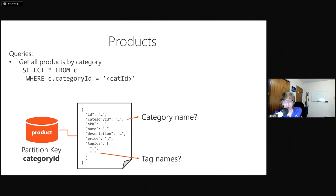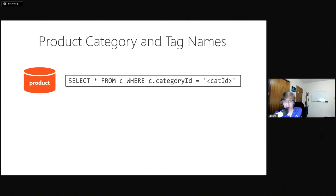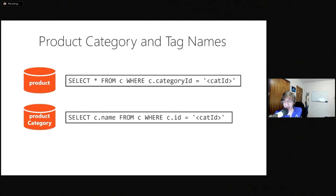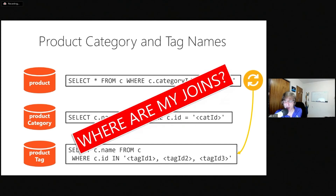Partitioning on category ID satisfies the most common query and scales nicely as categories and products are added. But when I get those product documents back, I can't yet display the webpage — I only have IDs for the category name and tag names, not the actual strings. That means I need to run this query to get all products in a category, then a second query to get the category name, and then — for each result from the first query — a third query with an IN clause to get the names of the tags. At this point, if this weren't virtual, I'd be hearing moaning and groaning — in a relational world you'd just do the joins.